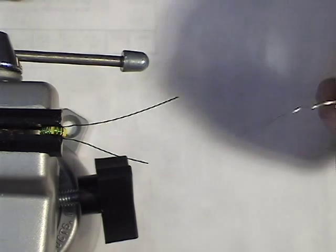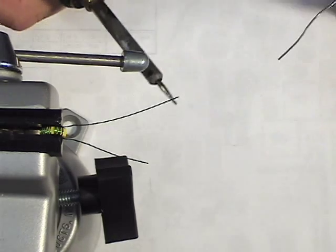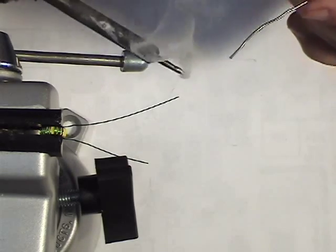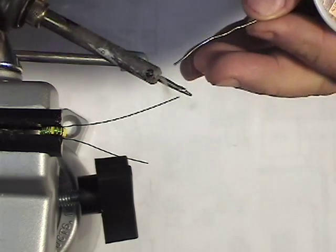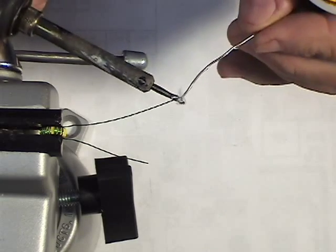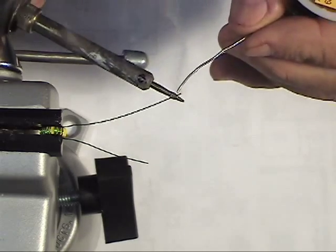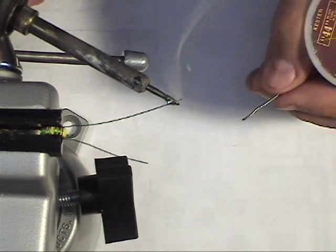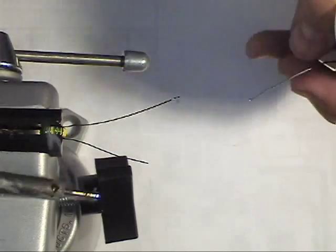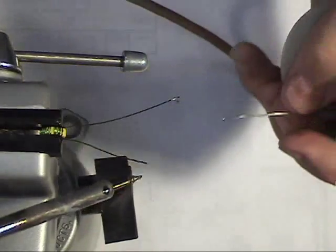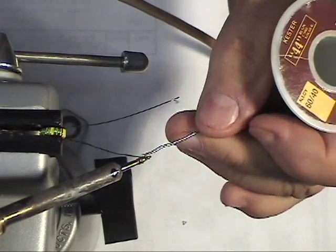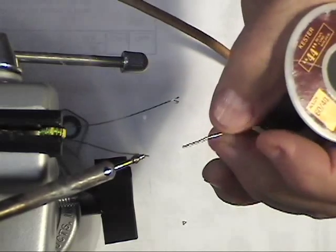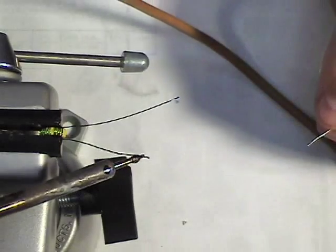This green wire that I have is heat strippable. The way we're going to strip that is take our soldering iron, get a glob of solder on it, come up from underneath and we're going to add plenty more solder. If we get that hot, it will burn the enamel right off. We'll do that on both ends.